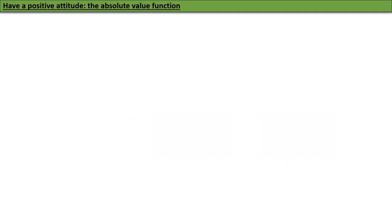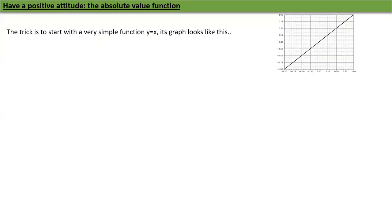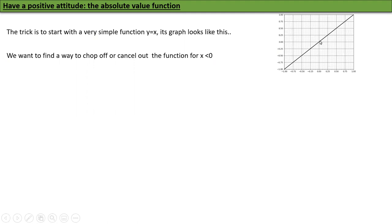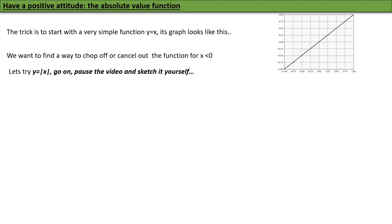We now have to talk about the absolute value function. Our trick starts with a very simple function y = x — just a straight line. We want to chop it off at x = 0, setting everything to the left to zero. My first trial is y = |x|. I want you to pause the video and try to see what y = |x| looks like — plot it and show me.